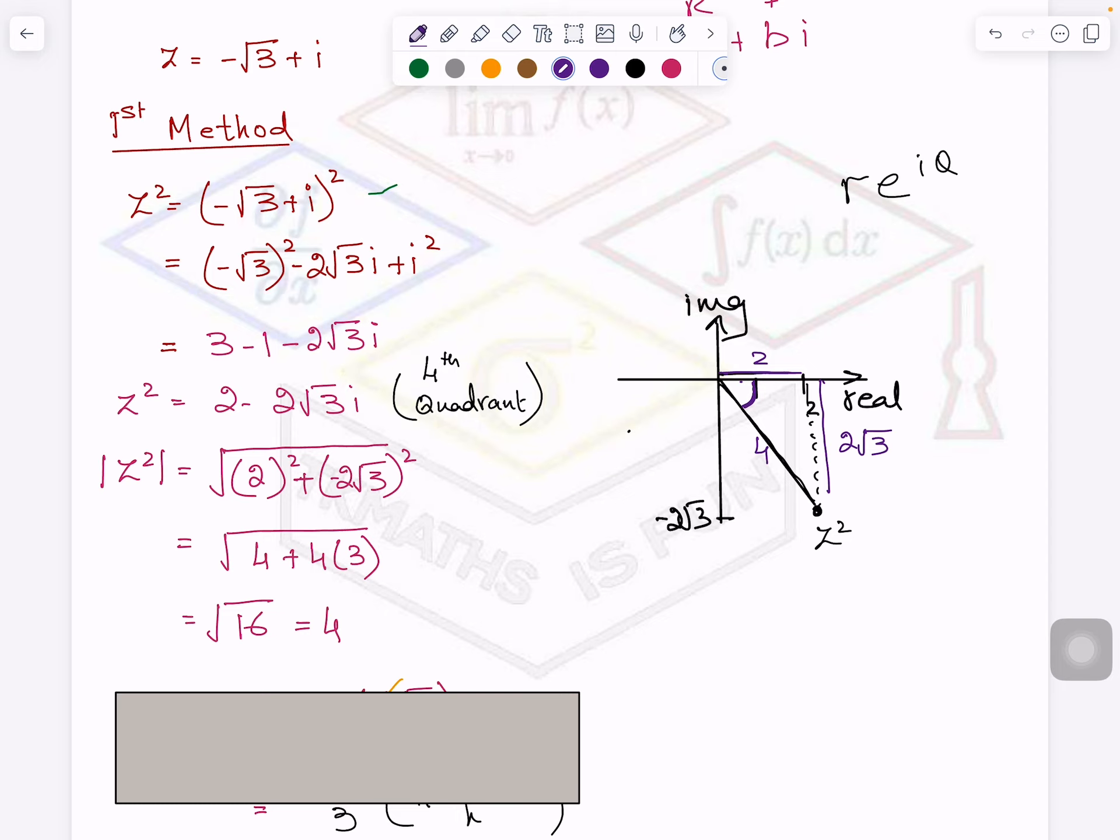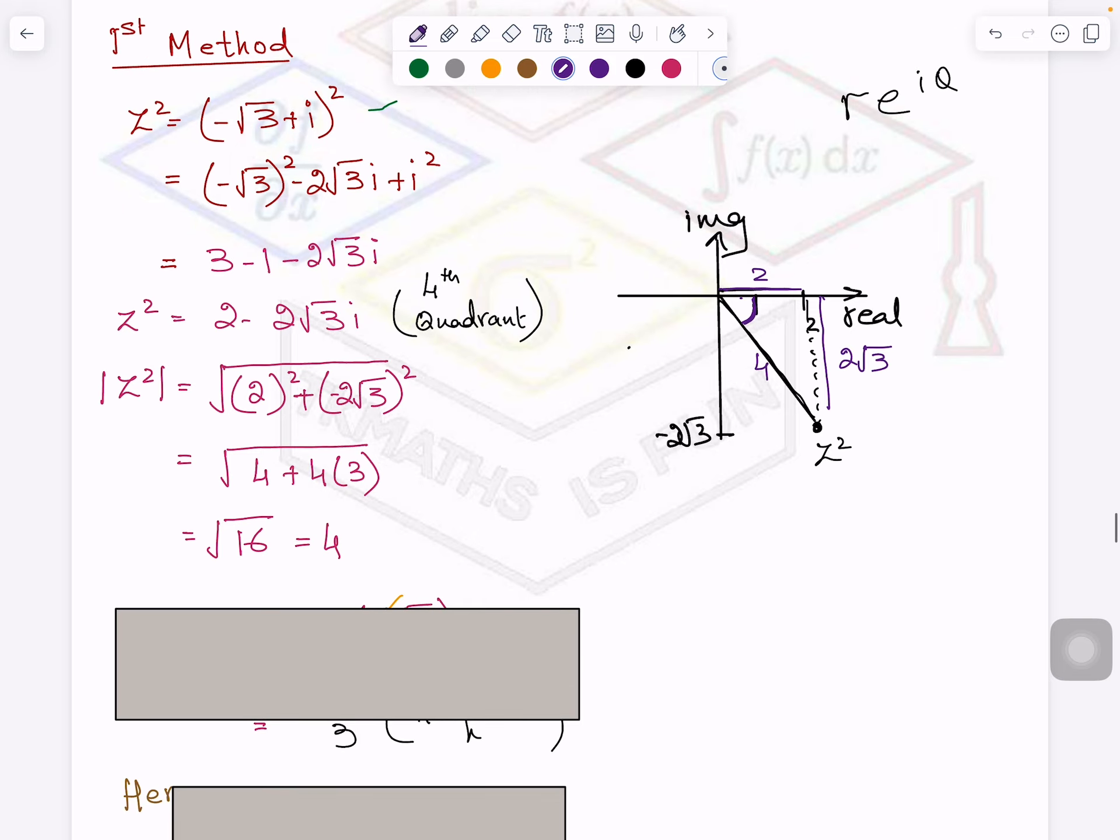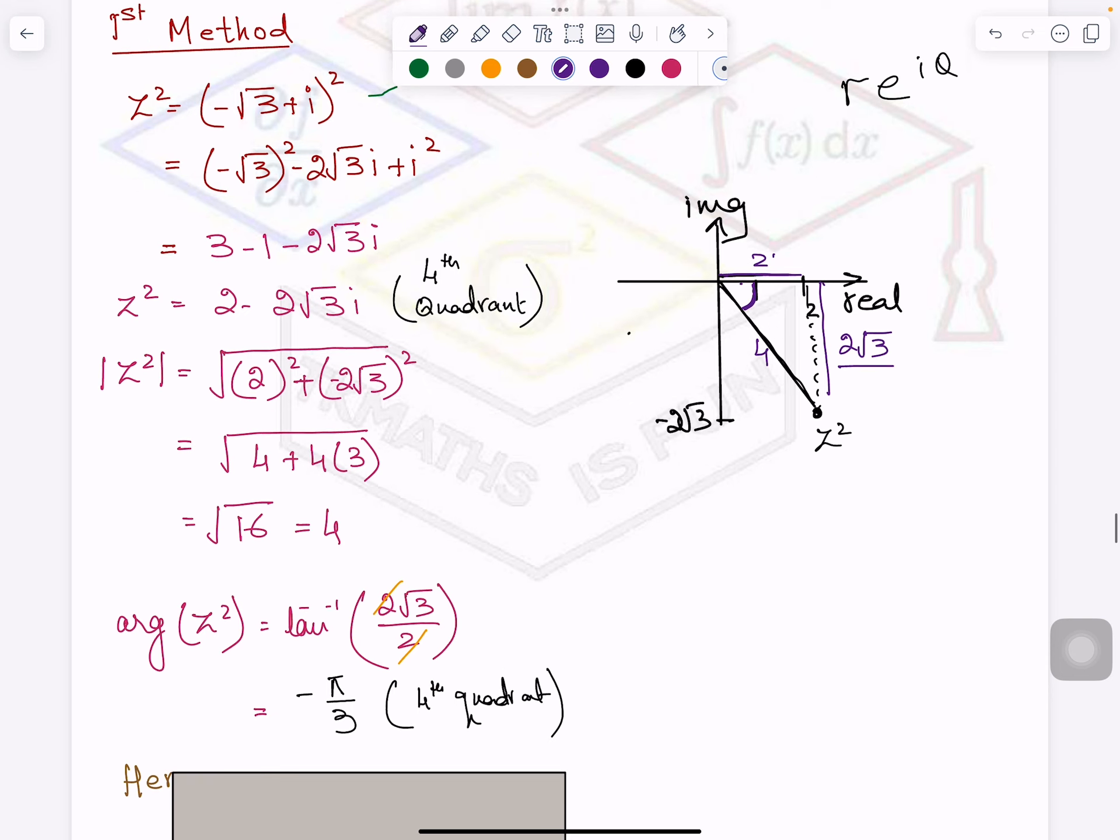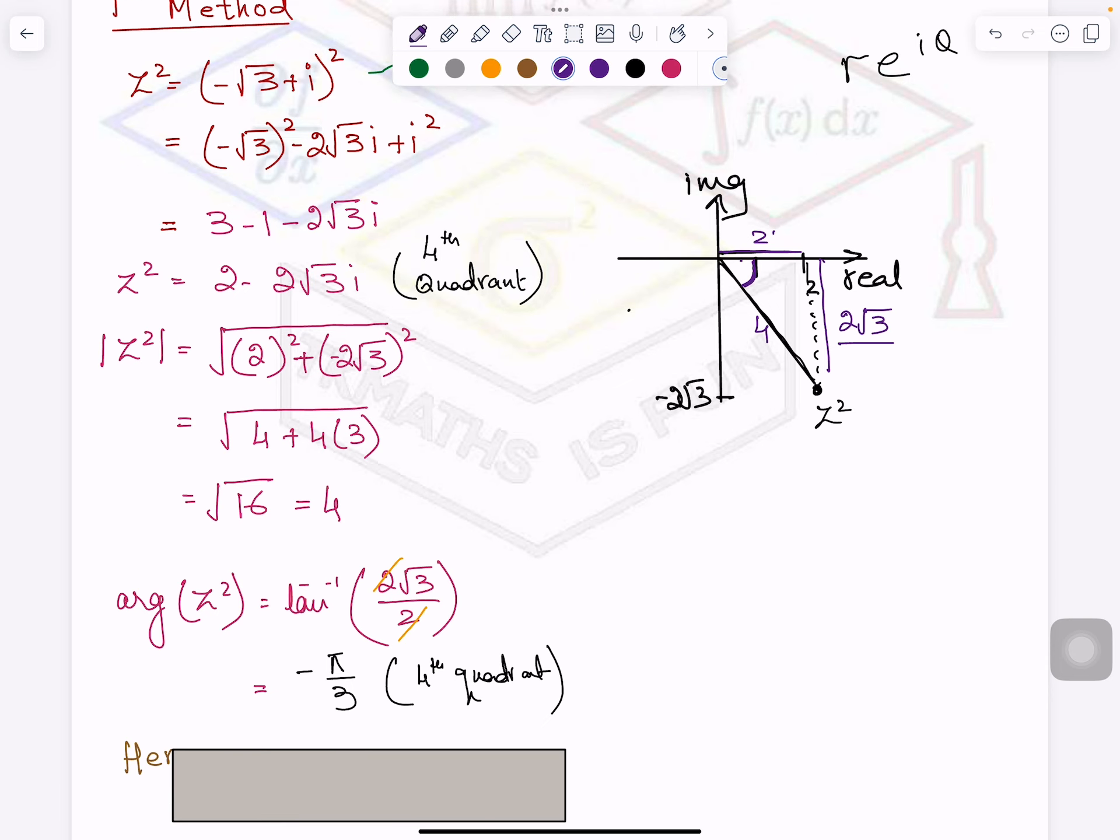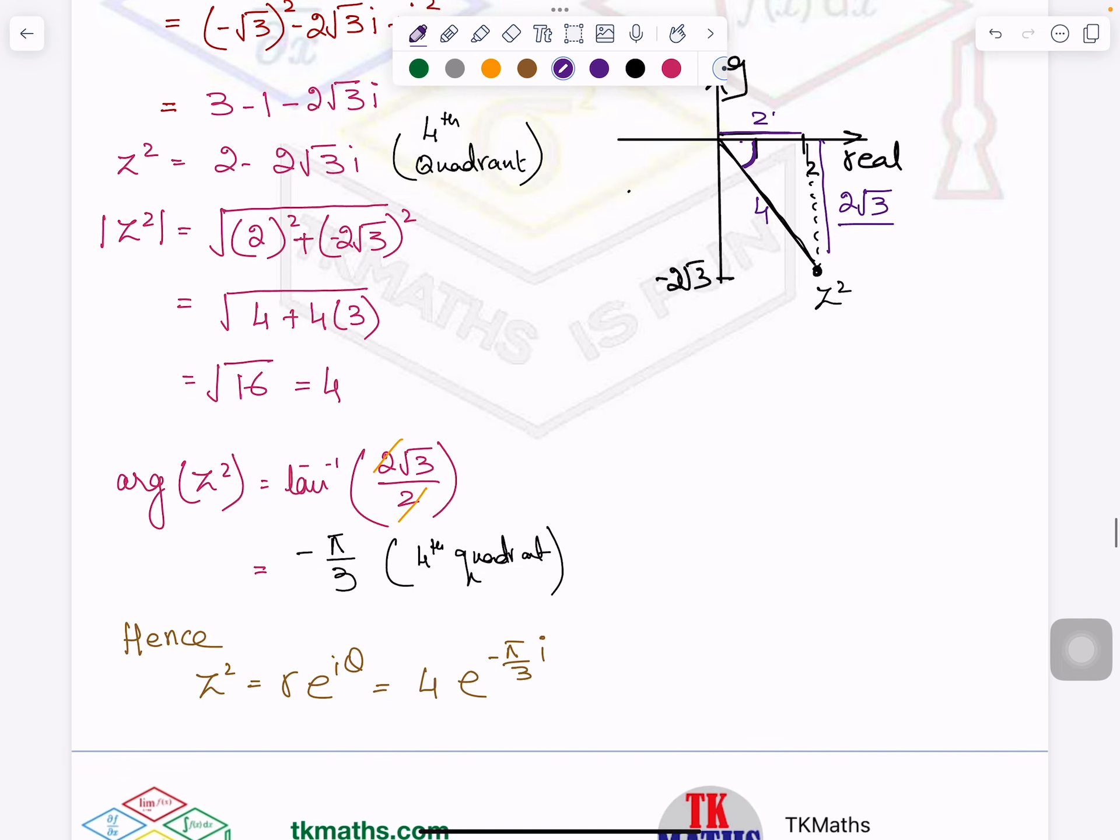Similarly, for this angle, which will be negative because it is in this fourth quadrant. So I will use tan inverse equals this over this. So because it is in the fourth quadrant, so your answer will be negative. Whenever your complex number is in the third and fourth quadrant, angle is negative. When it is in the first and second quadrant, it is positive. So hence, you got your R e^(iθ), which is 4 e^(-iπ/3).